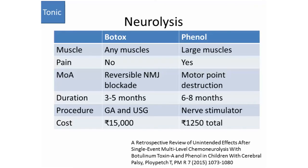The next modality is neurolysis, which works on the tonic aspect of spasticity. There are two agents commonly used: Botox and phenol. Botox can be used in any muscle; phenol can only be used in large muscles. While Botox is painless, phenol is painful at injection time, and while Botox is reversible, phenol is destructive. Botox lasts about three to five months; phenol can last six to eight months. Botox is administered with local anesthesia and ultrasound guidance; phenol uses a nerve stimulator with the patient awake. There's a significant cost difference: Botox costs about 15,000 rupees per session, while phenol costs about 1,250 rupees and may only be used once or twice per patient.